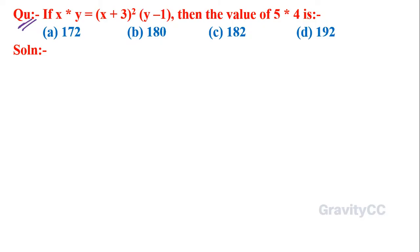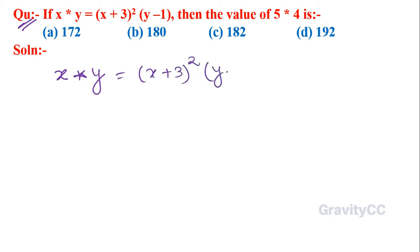Question: if x★y is equal to (x+3)² × (y−1), then the value of 5★4 is. So here, given x★y is equal to (x+3)² × (y−1).